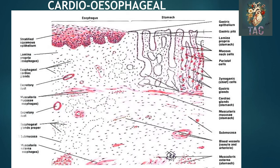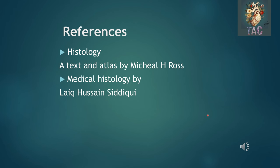Another slide shows the cardioesophageal junction. You can appreciate that the epithelium suddenly changes from stratified squamous non-keratinized to simple columnar epithelium of the cardiac part of the stomach. Also, the structures associated with the stomach are absent in this part. So here we end today's lecture.